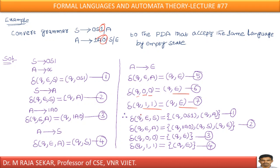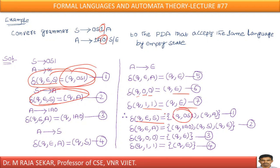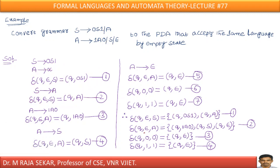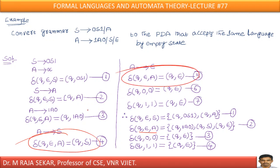We can now simplify and combine all transitions. Delta of (Q, epsilon, S) = (Q, 0S1) and (Q, A) — combining productions 1 and 2. Delta of (Q, epsilon, A) = (Q, 1A0), (Q, S), and (Q, epsilon) — combining the three A-productions. And from rule 2: delta of (Q, 0, 0) = (Q, epsilon), and delta of (Q, 1, 1) = (Q, epsilon).